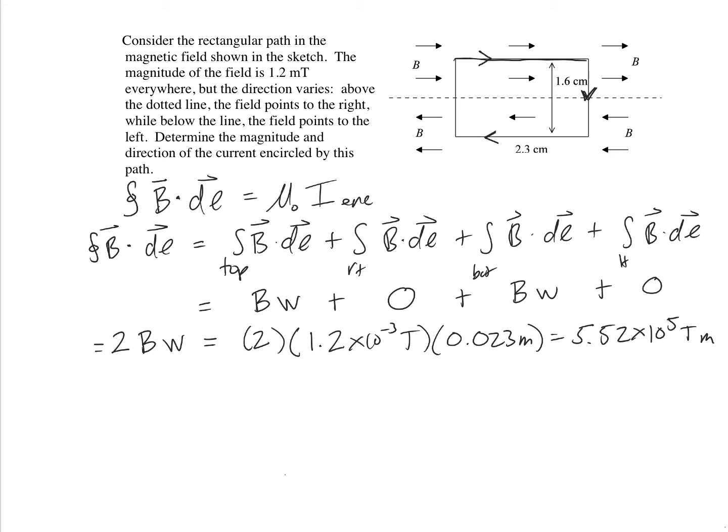Now to find the encircled current, we're just going to use Ampere's law. That's going to be 5.52 times 10 to the minus 5 tesla meters divided by mu naught, which is 4 pi times 10 to the minus 7 tesla meters per amp. And this gives us 43.9 amps.